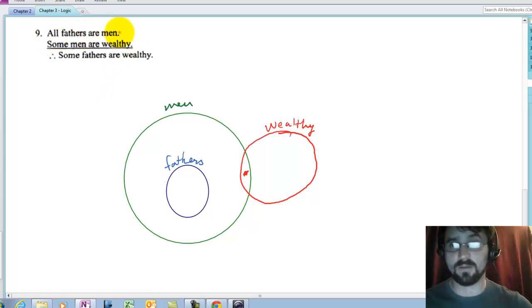Let's check this. All fathers are men. Do I have that? Yes. Some men are wealthy. Do I have that? Yes. Some fathers are wealthy. Do I have that? Not necessarily. If I drew the wealthy circle to overlap, then it would look like the conclusion is a valid conclusion from the premises.